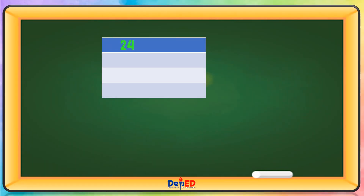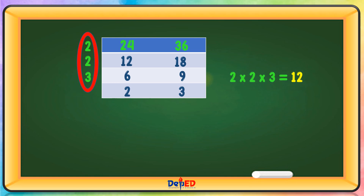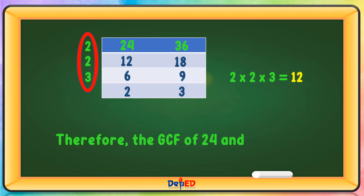We have 24 and 36. Using prime number 2: 24 divided by 2 equals 12, 36 divided by 2 equals 18. Again by 2: 12 divided by 2 equals 6, 18 divided by 2 equals 9. Using prime number 3: 6 divided by 3 equals 2, 9 divided by 3 equals 3. Multiply: 2 times 2 times 3 equals 12. Therefore, the GCF of 24 and 36 is 12.